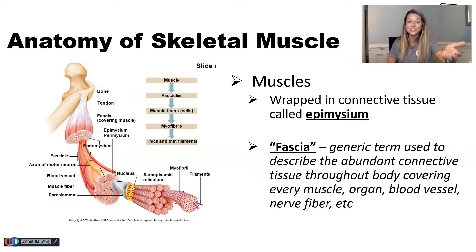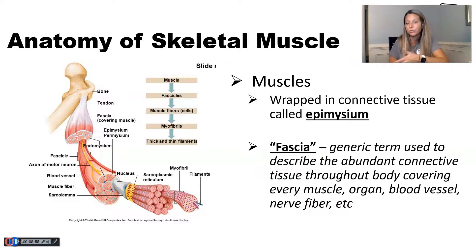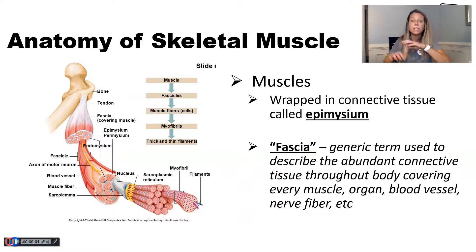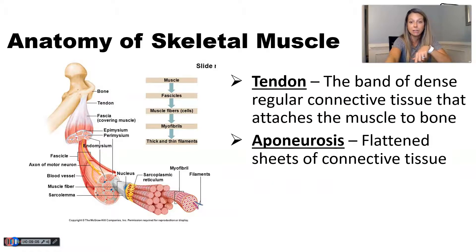When we dissect cats at the end of the year, you'll hear me say things like 'to see that muscle, you're going to have to dig through the fascia — you have to separate all the connective tissue.' That's what I mean when I say fascia. But when you're talking about your muscular system, there are two terms you need to understand.